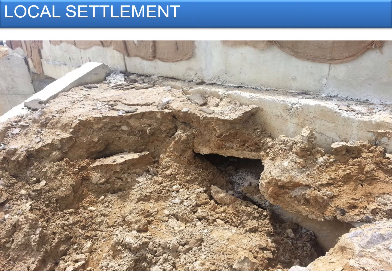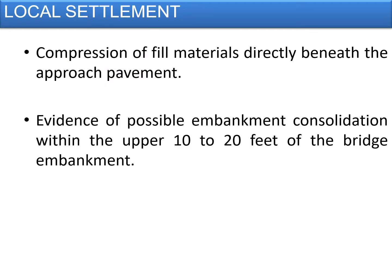Local settlement occurs because of lack of compaction or initial consolidation of the soil, creating a gap between the bottom of the approach slab and the top of the consolidated soil — in the area just below the approach slab — or due to possible embankment consolidation within the upper 10 to 20 feet of the bridge embankments.